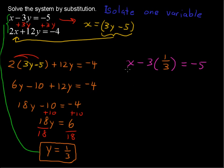Okay, so now we've got to solve this equation for x. x minus 1, negative 3 times 1 third is negative 1, equals negative 5. Add 1 to each side and you get x equals negative 4.